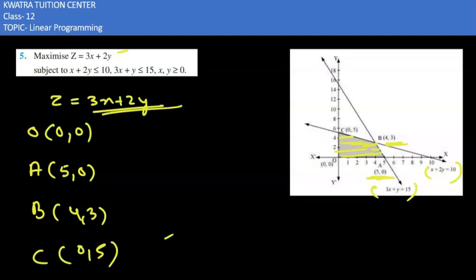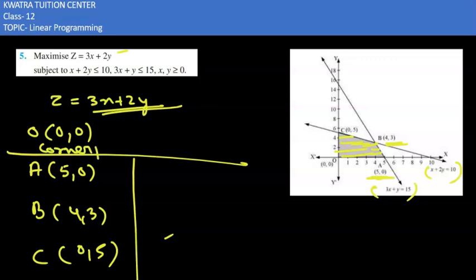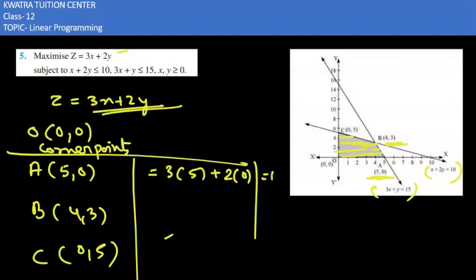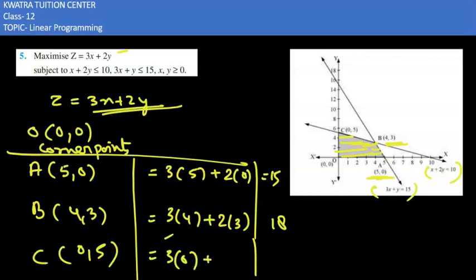When we substitute these coordinate points into the equation, we get the following values. For point A (5, 0): 3×5 + 2×0 = 15. For point B (4, 3): 3×4 + 2×3 = 18. For point C (0, 5): 3×0 + 2×5 = 10.